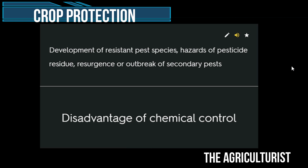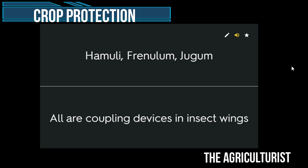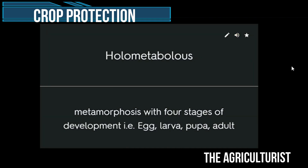Development of resistant pest species, hazards of pesticide residue, resurgence or outbreak of secondary pests — disadvantages of chemical control. Hamuli, frenulum, jugum — all are coupling devices in insect wings. Holometabolous — metamorphosis with four stages of development: egg, larva, pupa, adult.